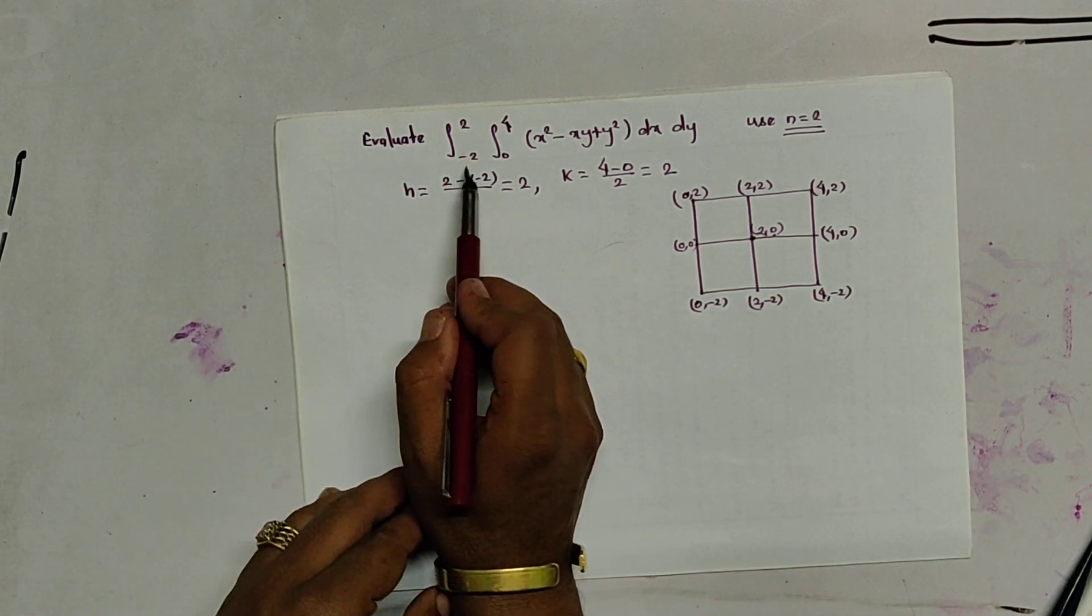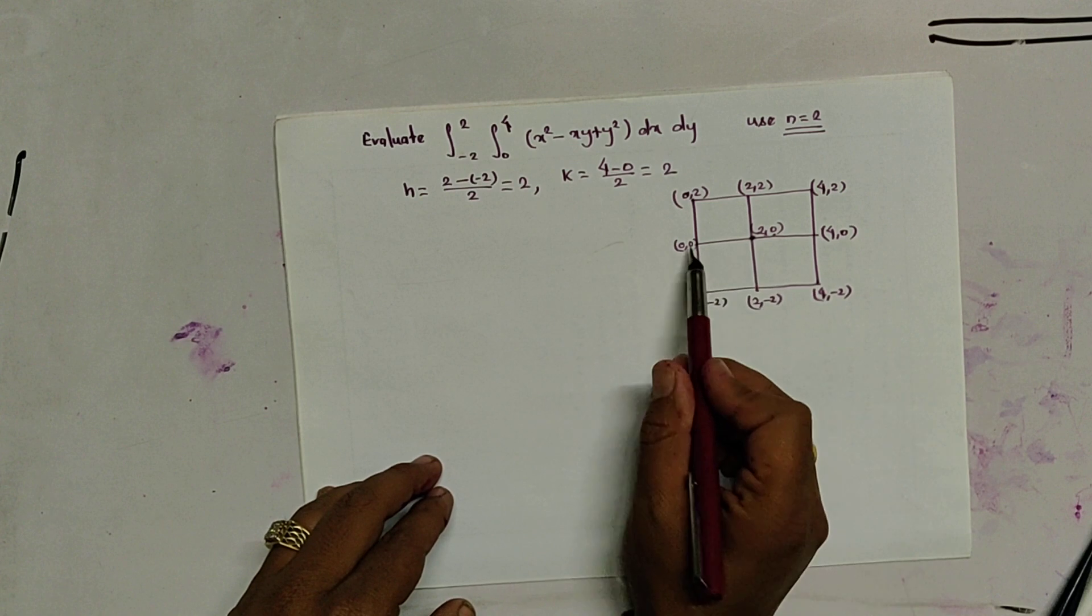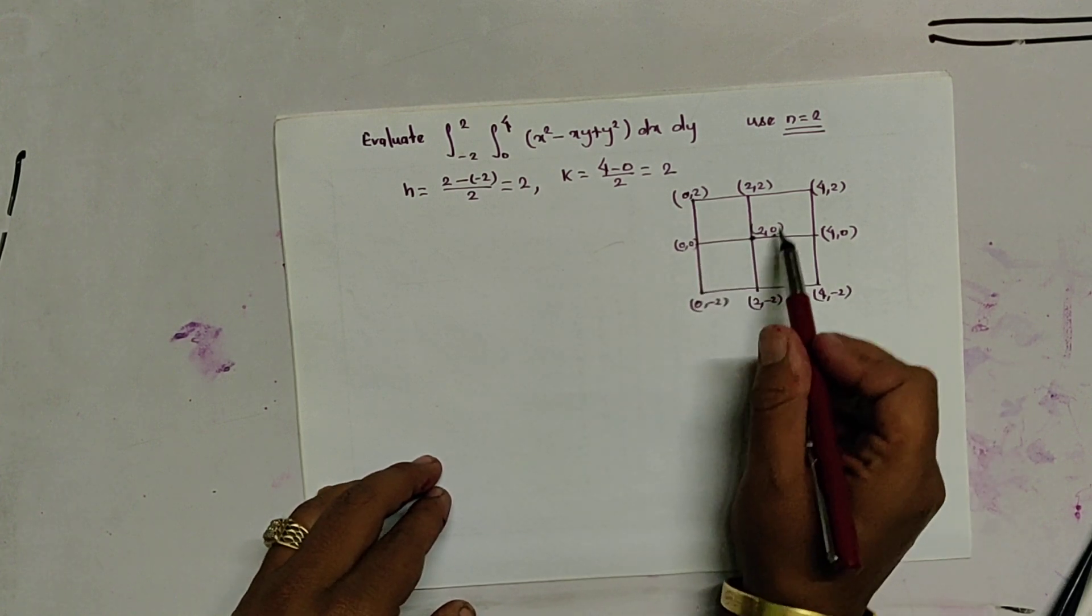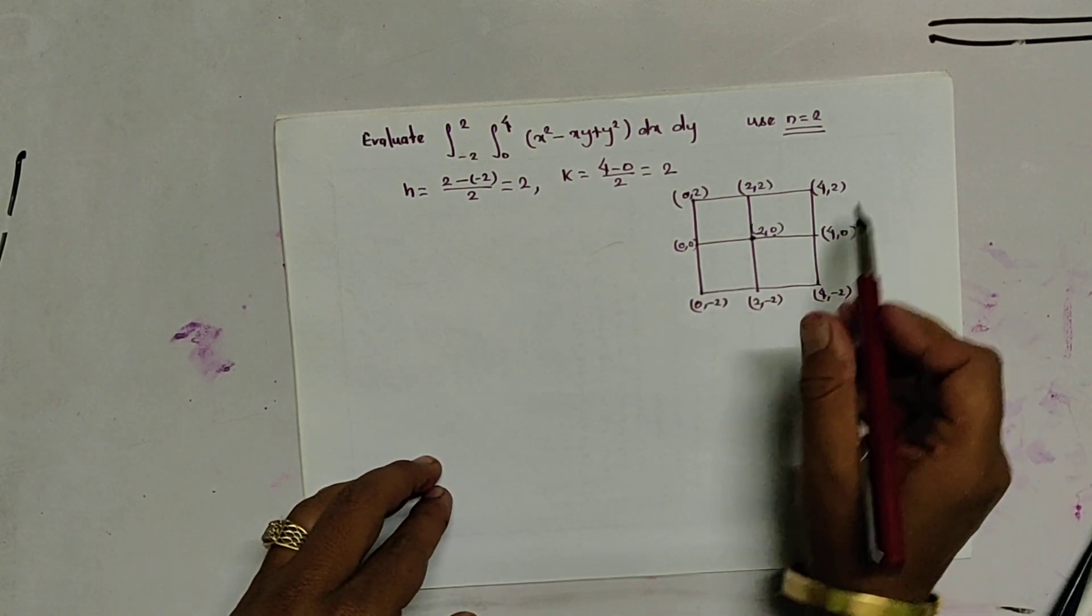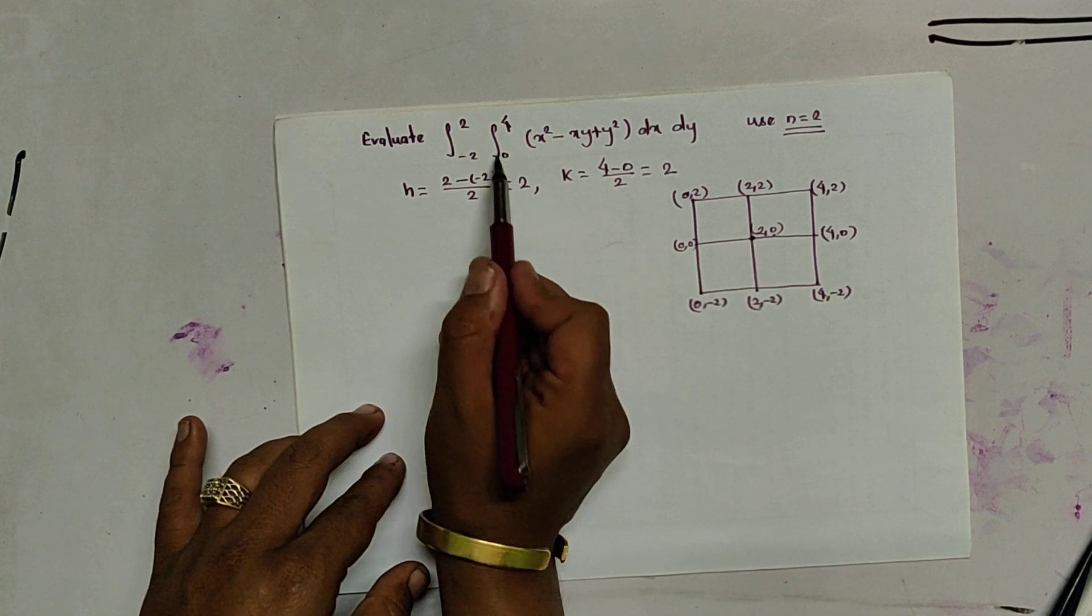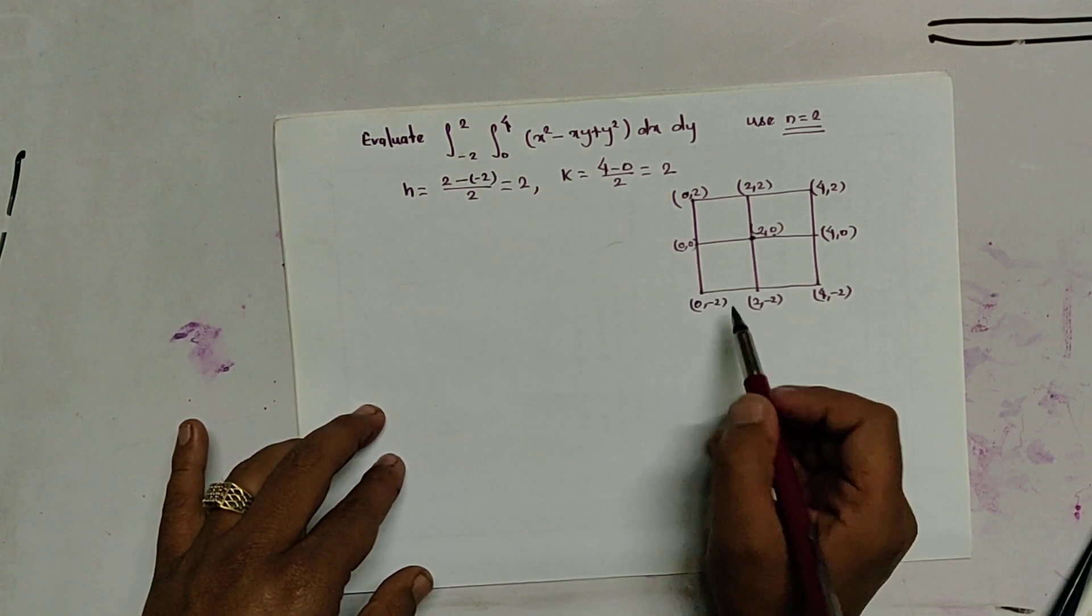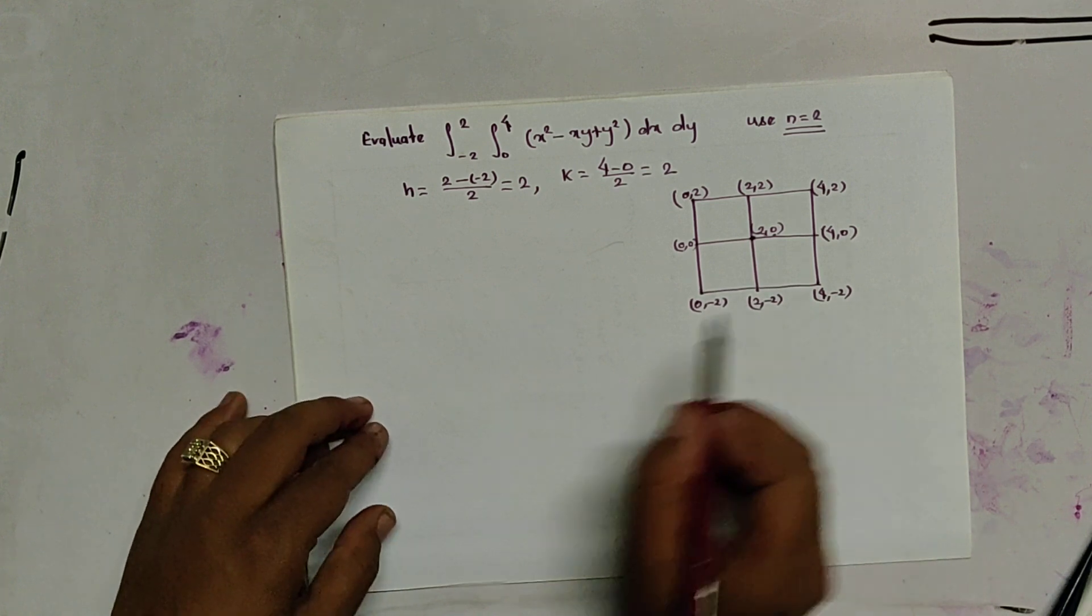Since it is from minus 2, 2, 2. Minus 2, 0, 2. Minus 2, 0, 2. Minus 2, 0, 2. And it is 0, 0, 2, 4.